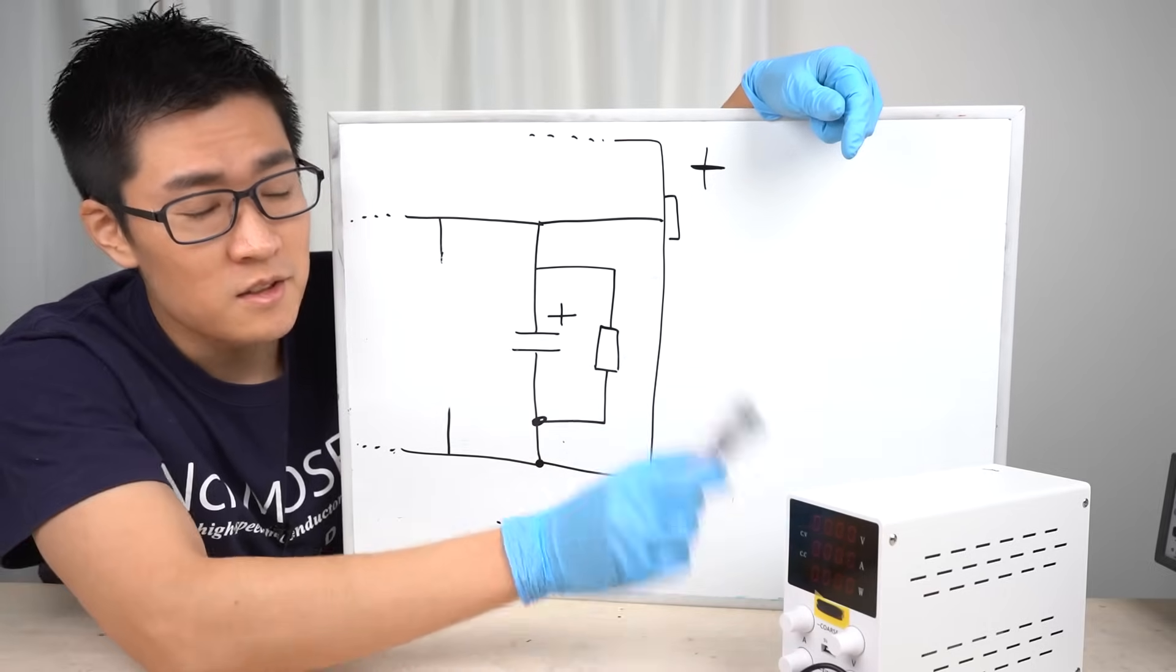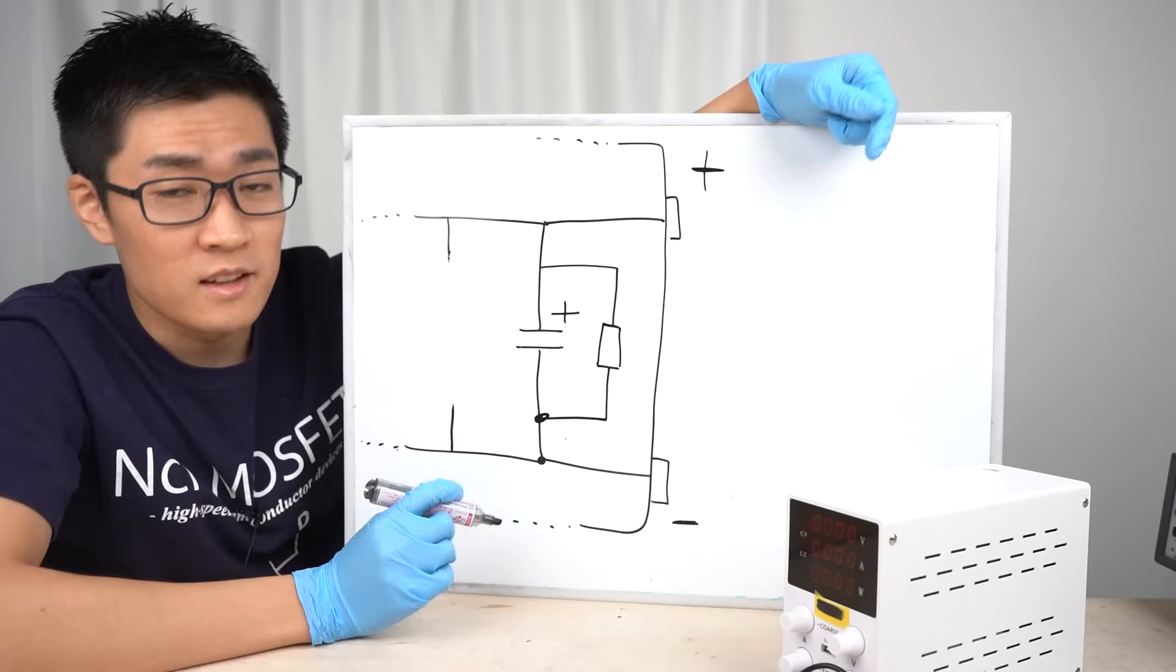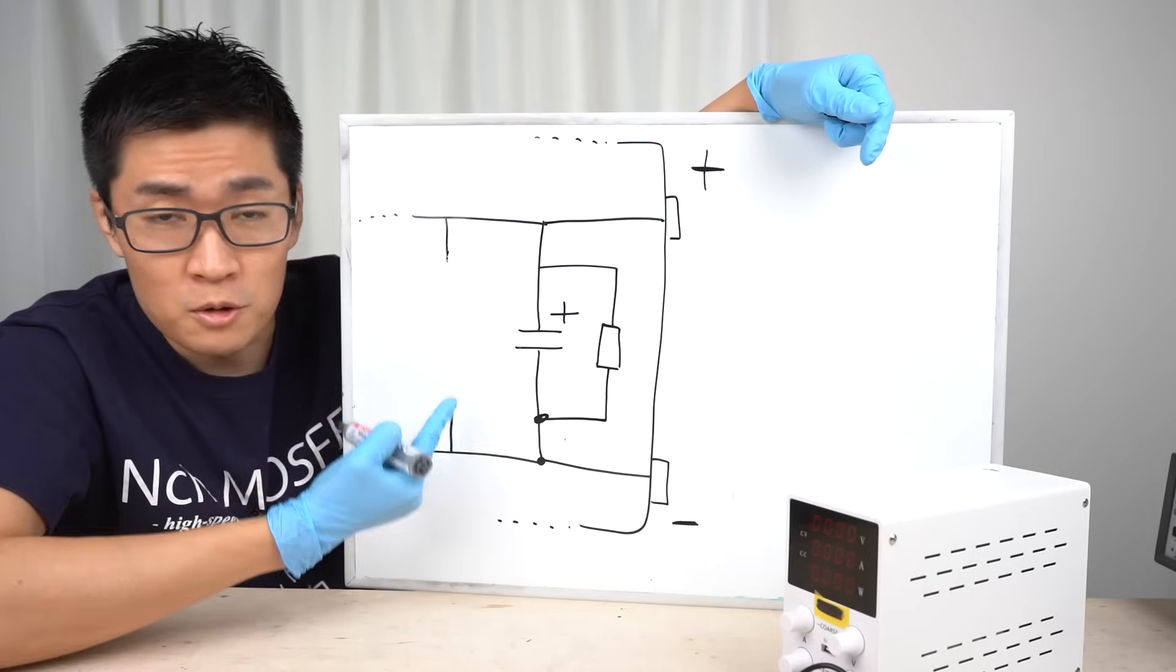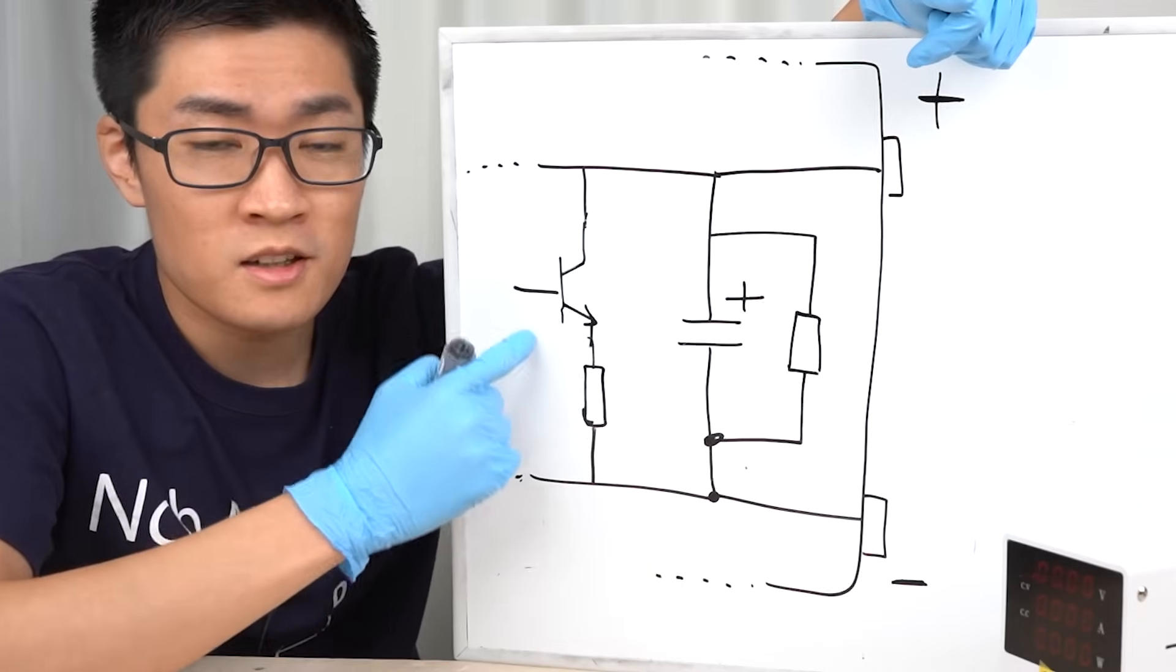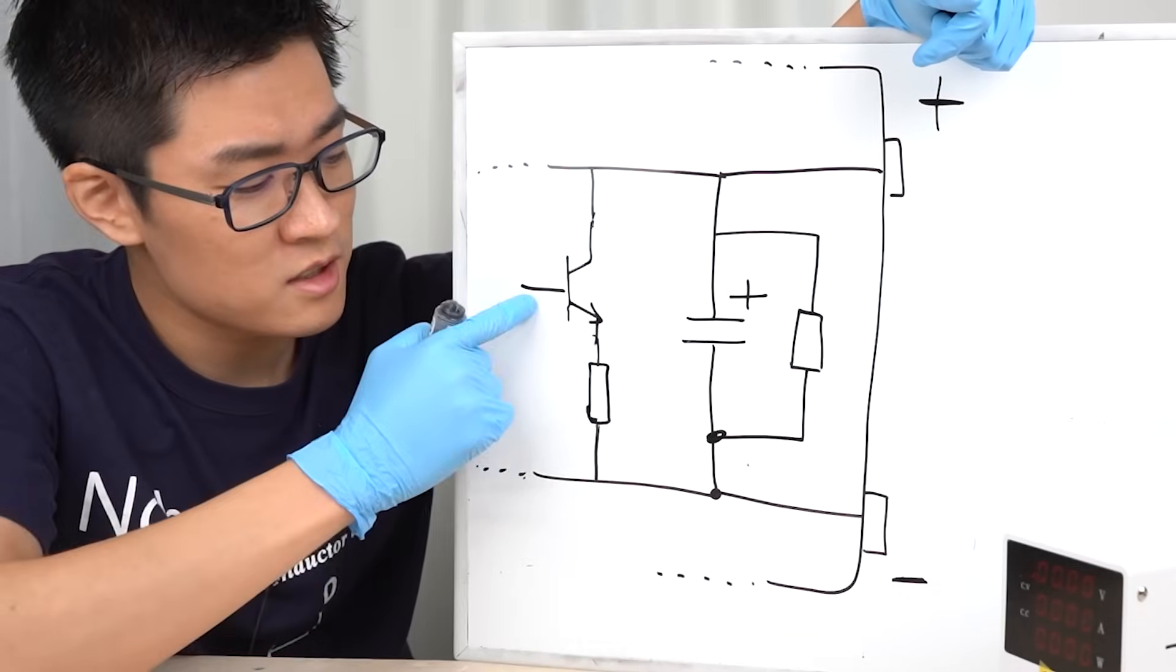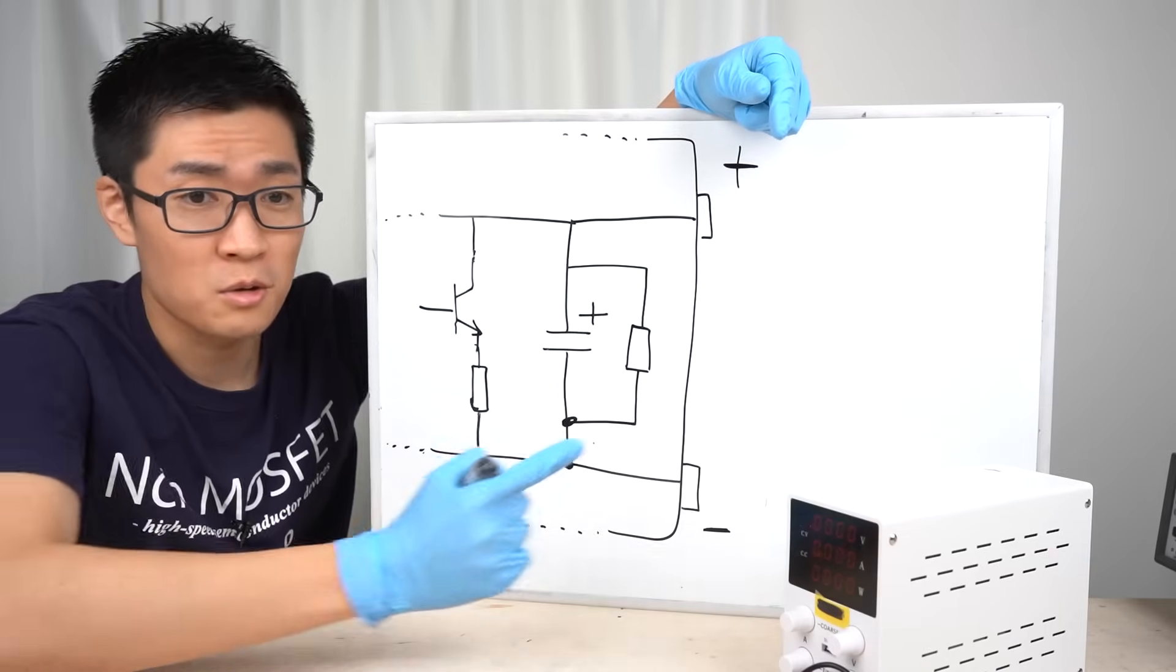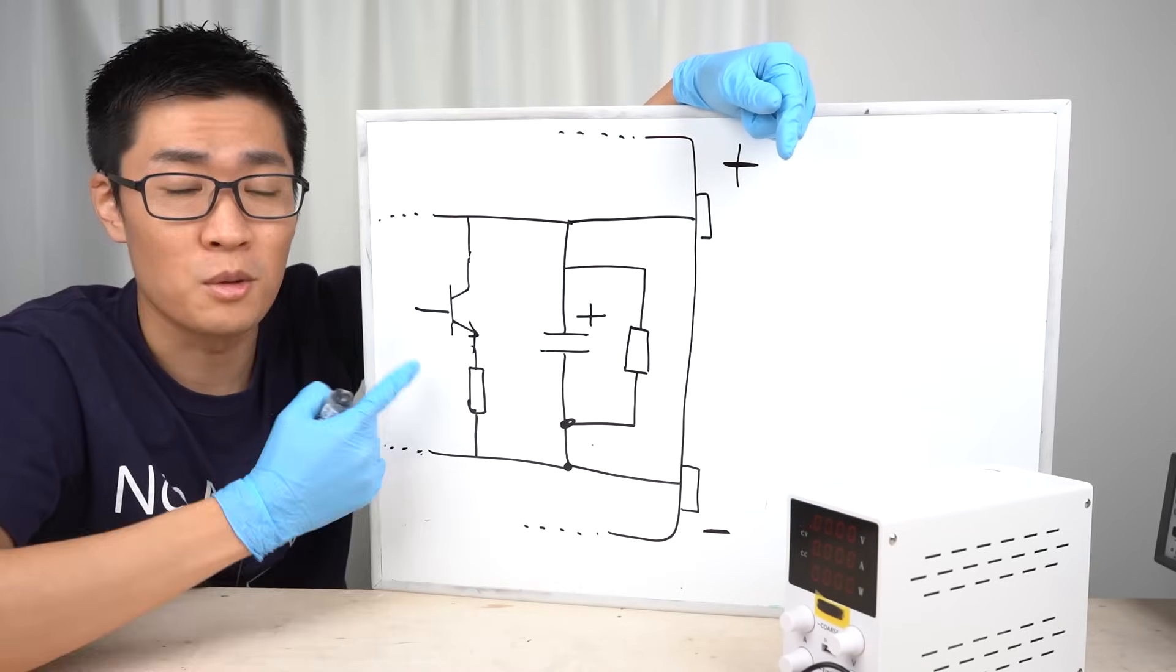This may not be the case for super cheap adjustable power supplies like this one, but typically adjustable DC power supplies have a discharge circuit to discharge the electrolytic capacitor quickly so that the output voltage decreases quickly. Usually the circuit looks like this. A discharge circuit continuously draws a constant current using a transistor and a shunt resistor. A discharge circuit increases the cost, so it's unlikely that it's used in cheap power supplies like this one.